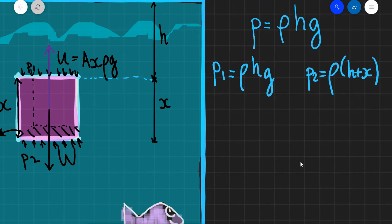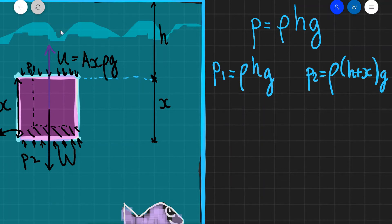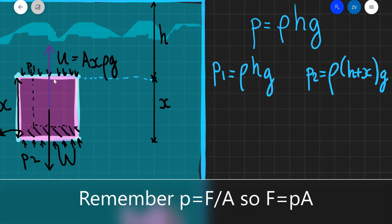This expression will then be multiplied by G. So, in general, the formula for the pressure at a depth is equal to rho H G. The top surface of the object will experience rho H G, whereas the bottom surface will experience rho times (H plus X), because now it's deeper, times G. These differences in pressure are also going to create different amounts of force acting on the top and the bottom of the object.